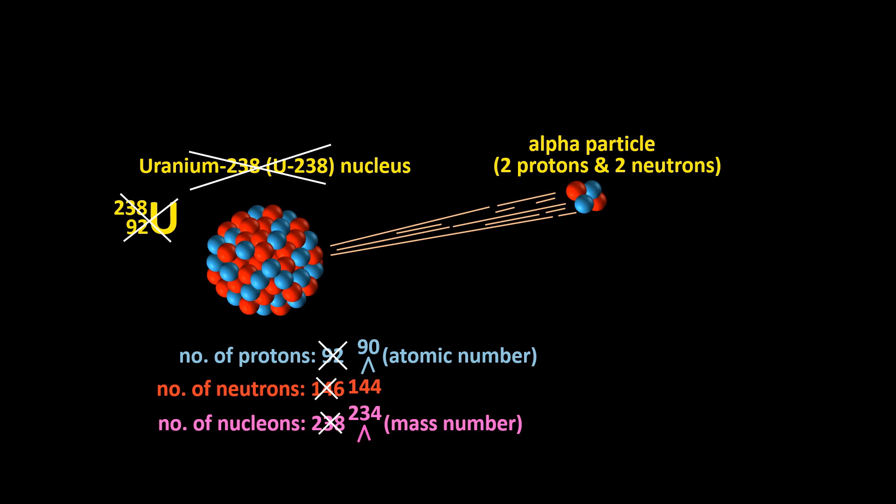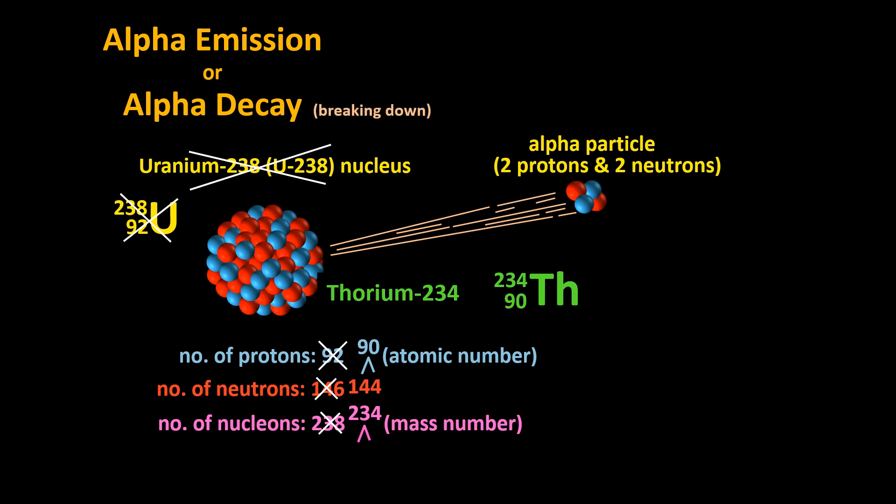So when the alpha emission occurs, the uranium-238 atom turns into a thorium-234 atom. The whole process is called alpha emission or alpha decay. Decay means breaking down into smaller bits. The leftover nucleus is called the daughter nucleus. Since alpha particles come from the nucleus of alpha-emitting atoms, alpha particles are a form of nuclear radiation. We'll look at beta and gamma radiation in our next episode.